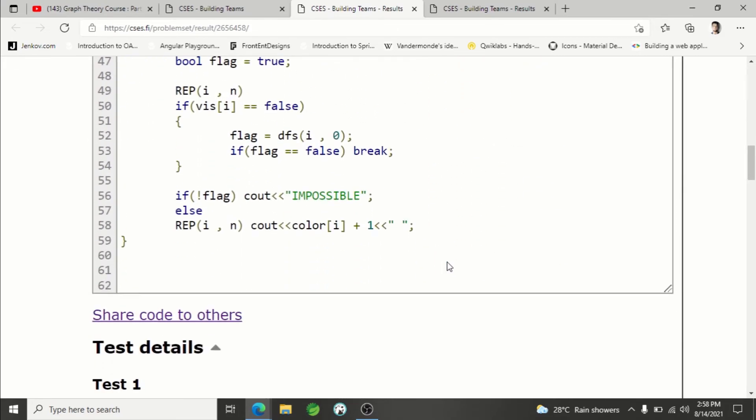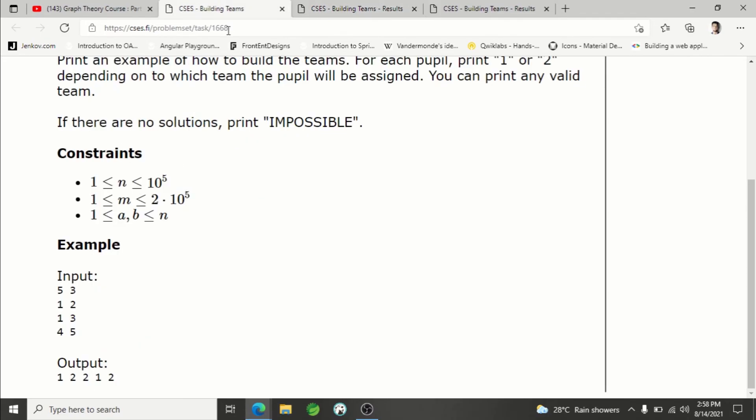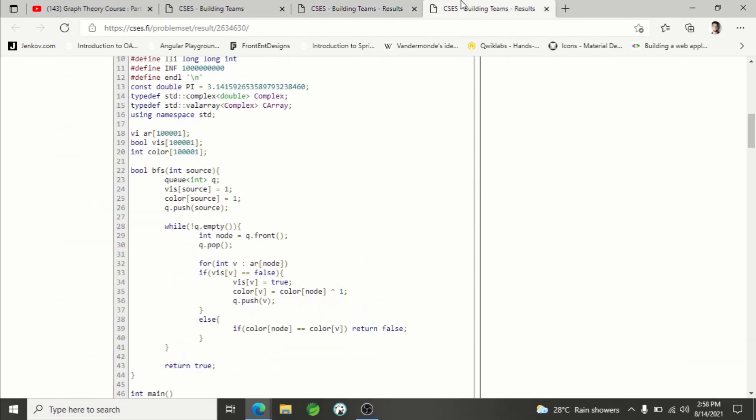If you are using color one and two, you can print the colors directly which represents which team they are in. Otherwise, if you are using color zero and one, you have to add plus one because we have to print one and two. So yeah, this is how you solve this problem. I've also solved this problem using BFS.